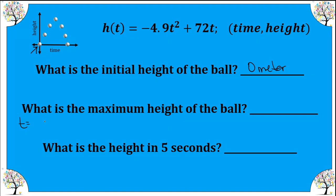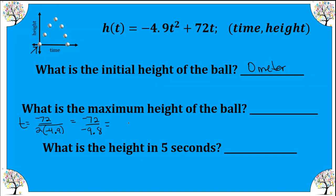The time it takes to reach the maximum height is negative b over 2 times a. When we divide this out we get a positive value, which we should because we're talking about time. This gives us approximately 7.3 seconds.